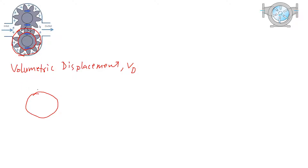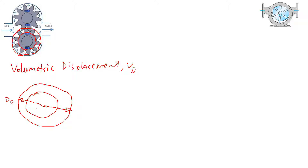To calculate the volumetric displacement, we can imagine that we have a shape where the outside diameter is D_O and the inside diameter is D_I. We can calculate the area, and if this gear has a width L, we can consider this as a cylinder.